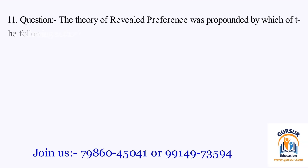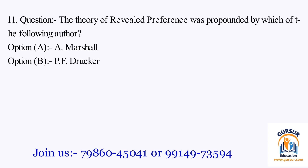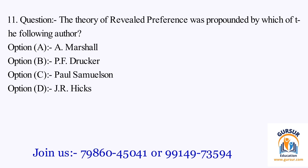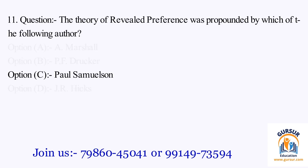Question number 11. The theory of revealed preference was propounded by which of the following authors? The option A is A. Marshall. The option B is P.F. Drucker. The option C is Paul Samuelson. The option D is J.R. Hicks. The right answer is Option C, that is Paul Samuelson.